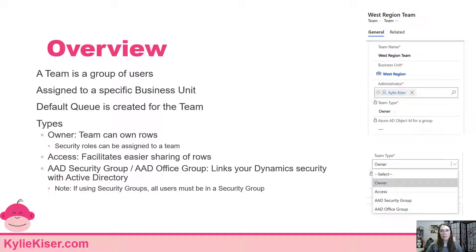Then we have — somewhat new for those of us who've been doing this for a while — Active Directory security groups or Active Directory Office groups that you can use to link your security with Active Directory or with Office. This is really cool because you can manage a lot of your security through Active Directory instead of needing to manage it in Dynamics. You can assign those teams specific security roles, and then when a person is added to that group in Active Directory, they're automatically added to that team inside Dataverse. And then if that team already has a role, they're good to go.